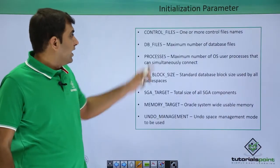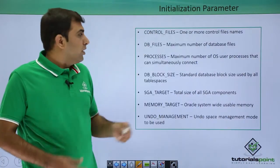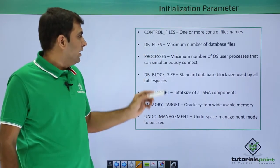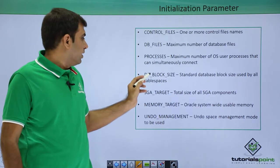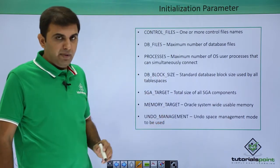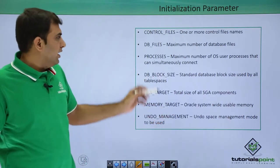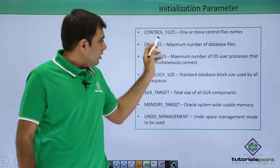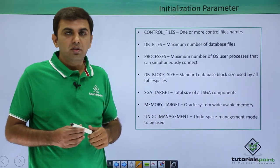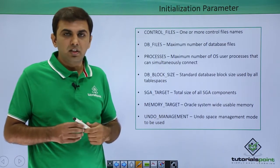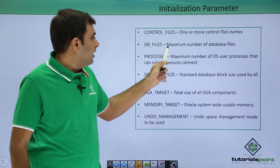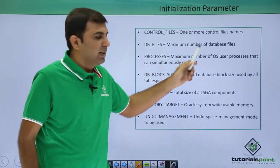Next, let's look at some initialization parameters. A few key parameters in Oracle are: control files, db files, processes, db block size, SGA target, memory target, and undo management. The control files parameter allows you to define how many control files you have in the Oracle database — like two or three control files. The db files parameter lets you define how many number of database files you have.